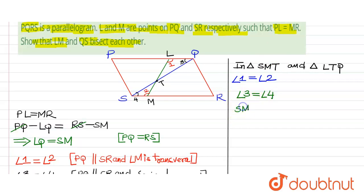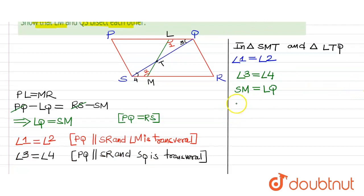SQ is transversal and SM is equal to LQ. So by ASA criteria we can say that triangle SMT is congruent to triangle LQT by ASA criteria.